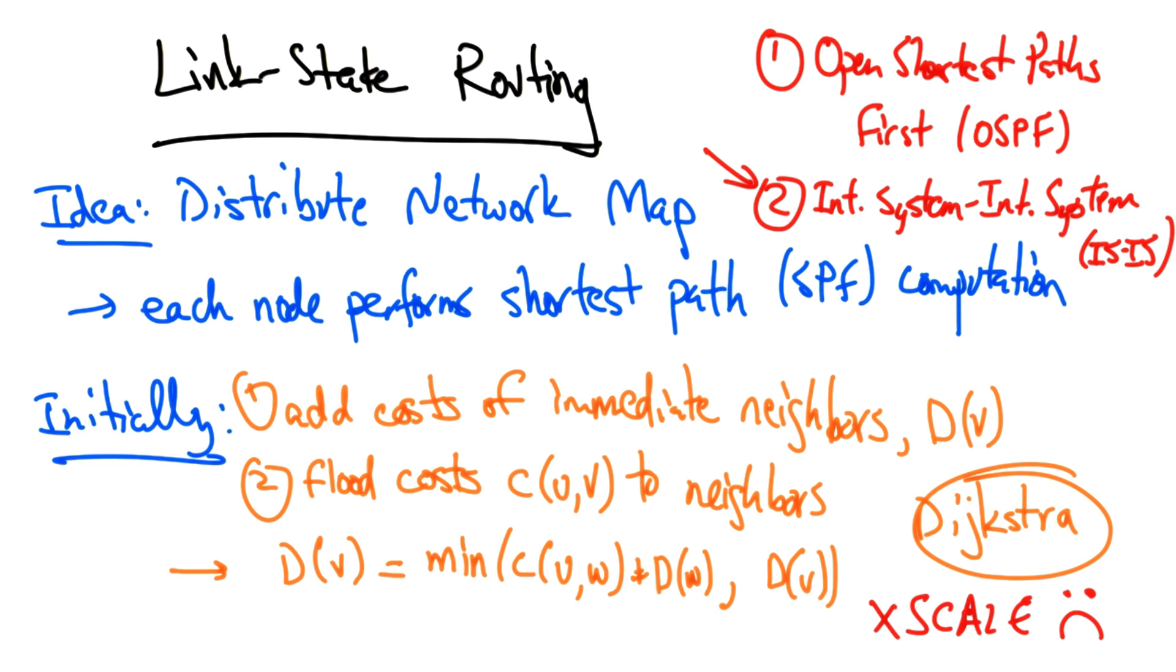One problem with link state routing is scale. The complexity of a link state routing protocol grows as n cubed, where n is the number of nodes in the network.